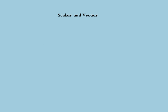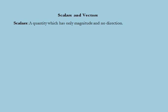Starting with the basic definition of a scalar and a vector: a scalar is a quantity which has only magnitude and no direction. Examples of scalars are length, distance, volume, density, etc.